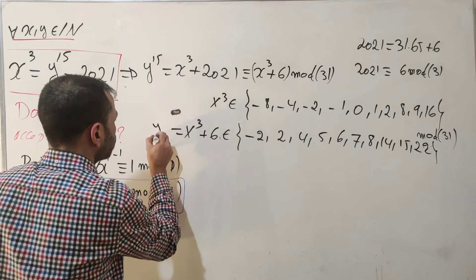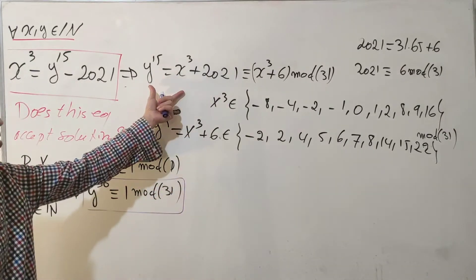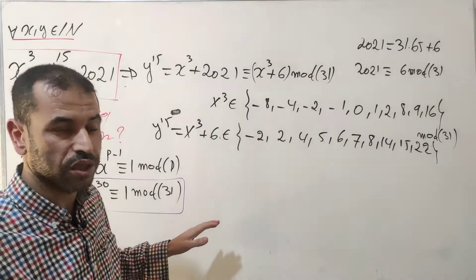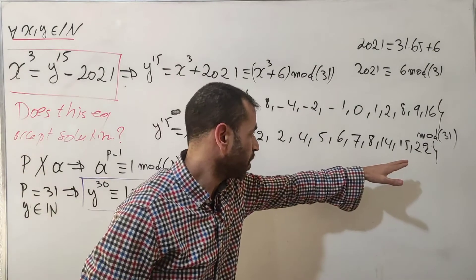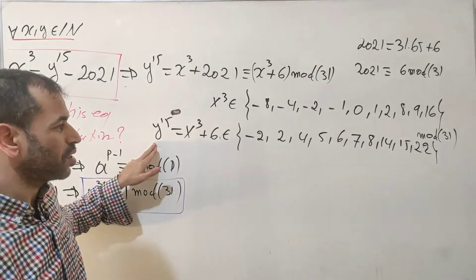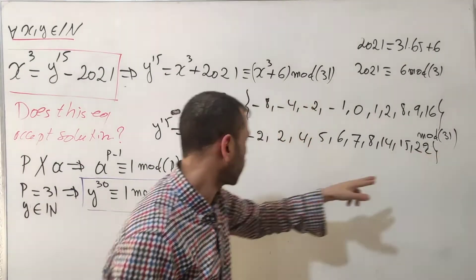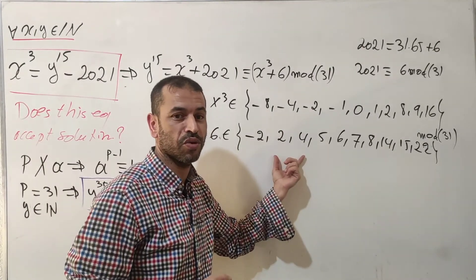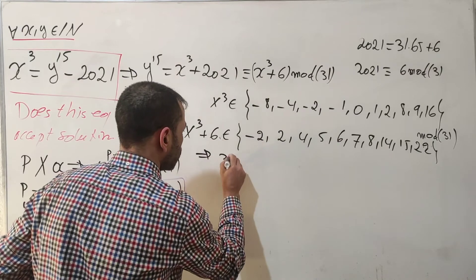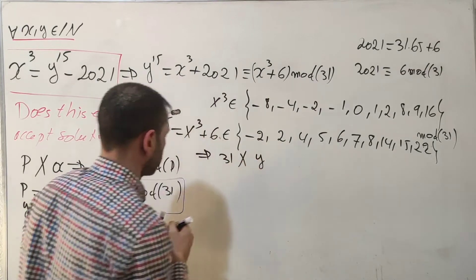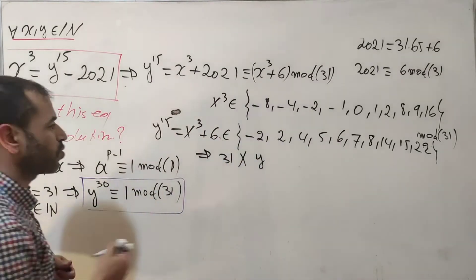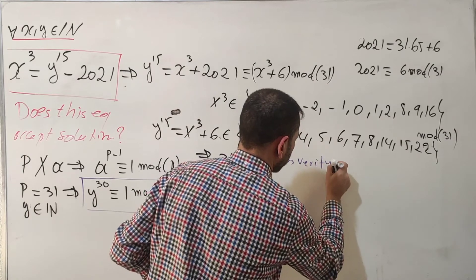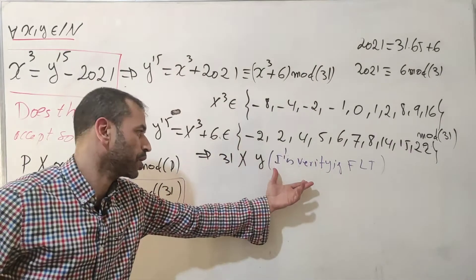Since x³ + 6 belongs to this set, and y¹⁵ ≡ x³ + 6 mod 31 by equality, notice that zero is absent from this set. For 31 to divide y, the remainder would need to be zero — but zero is not in the set. Therefore, 31 does not divide y.